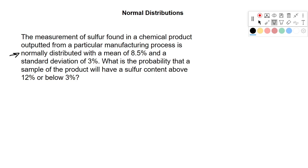We can see from the problem here that they tell us we have a mean of 8.5%, so that's our mu value. And our standard deviation they also give us, that's our sigma value.